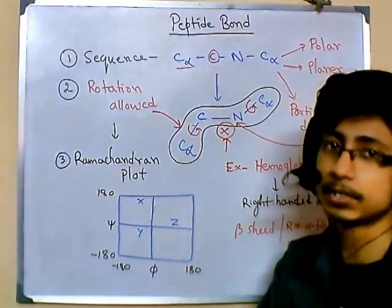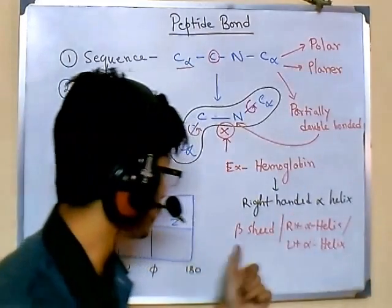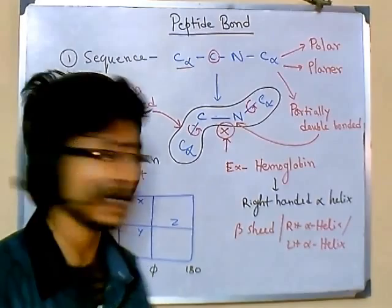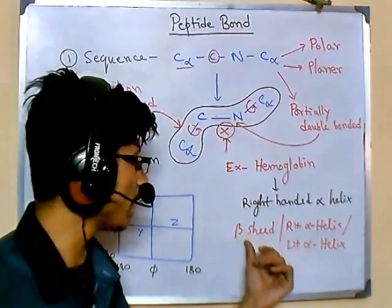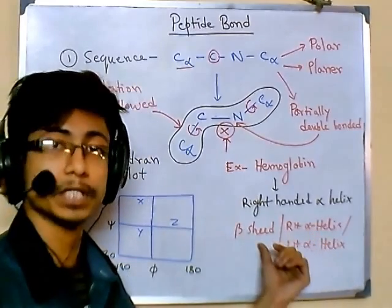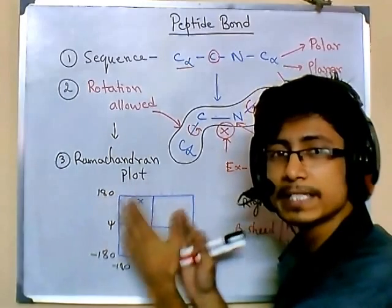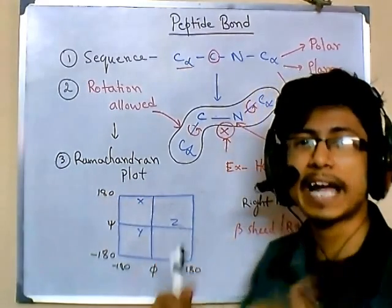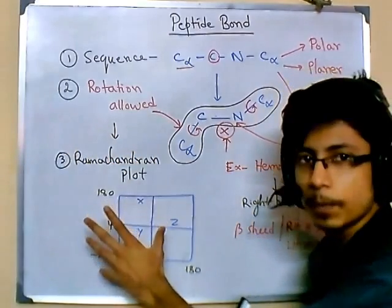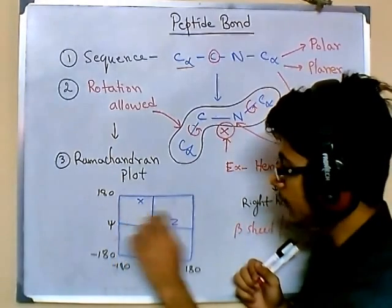Some conformations are allowed and some are not, particularly for secondary structures — which mainly means alpha helix and beta sheet. Alpha helix can be of two types: right-handed and left-handed. So there are three main possibilities for protein secondary structure conformation: right-handed alpha helix, left-handed alpha helix, and beta sheet.